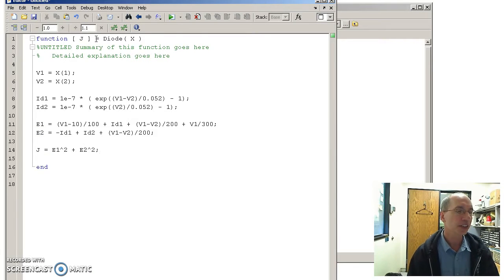If there's the sum squared error, if j is 0, or the minimum, the error has to be 0. Let's save that.